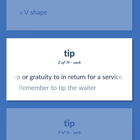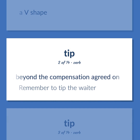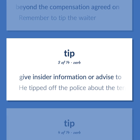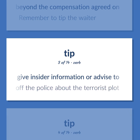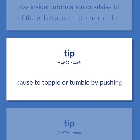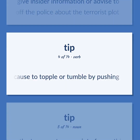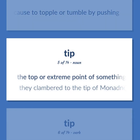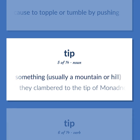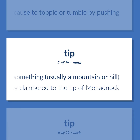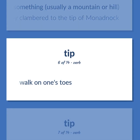Tip: Give a tip or gratuity to in return for a service beyond the compensation agreed on — remember to tip the waiter. Give insider information or advice to — he tipped off the police about the terrorist plot. Cause to topple or tumble by pushing. The top or extreme point of something, usually a mountain or hill — they clambered to the tip of Monadnock. Walk on one's toes.